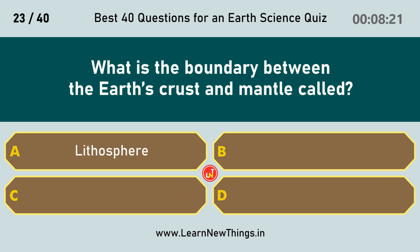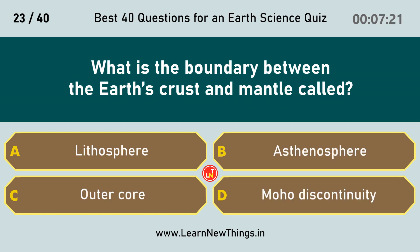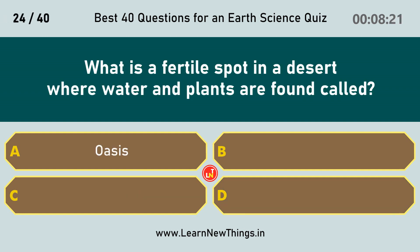What is the boundary between the Earth's crust and mantle called? Moho discontinuity. What is a fertile spot in a desert where water and plants are found called? Oasis.